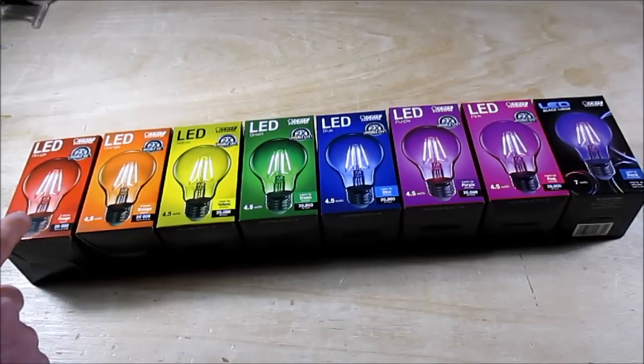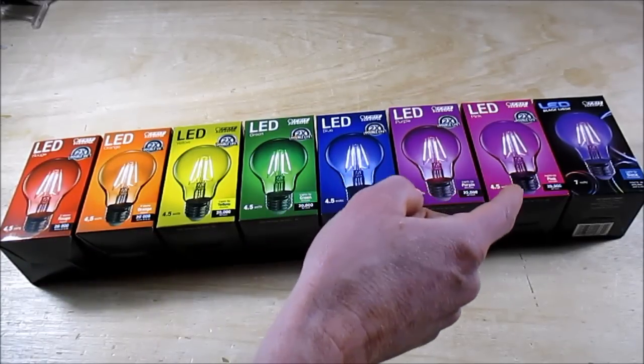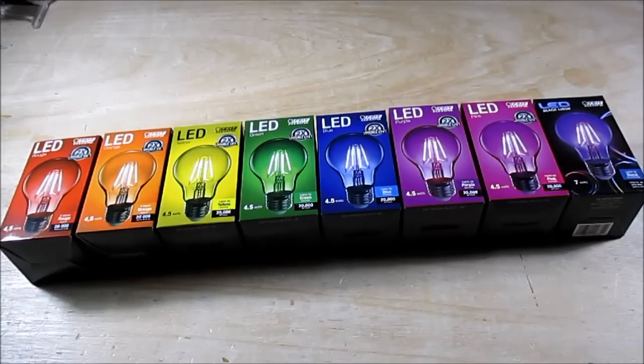You get red, orange, yellow, green, blue, purple, pink, and of course the black light. They're all dimmable except for the black light one. The color ones use four and a half watts. The black light one uses seven watts.